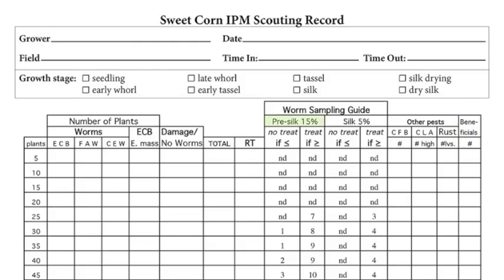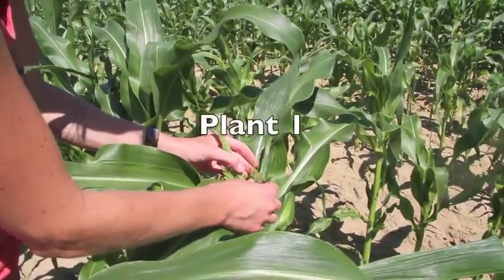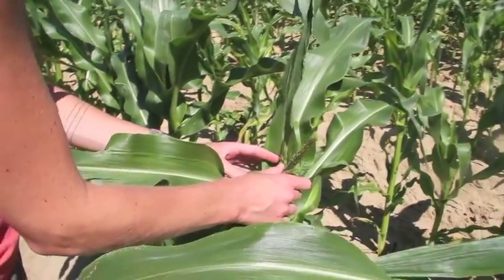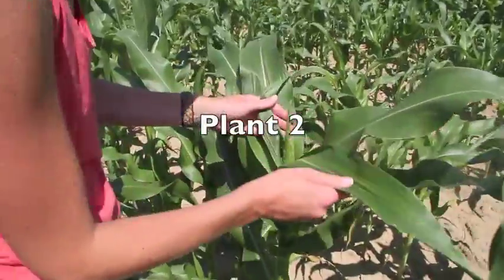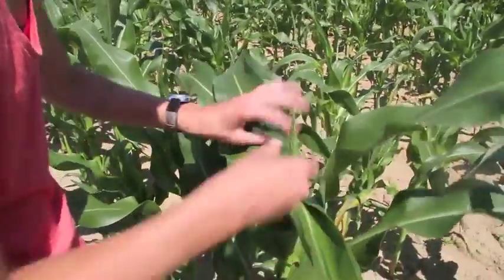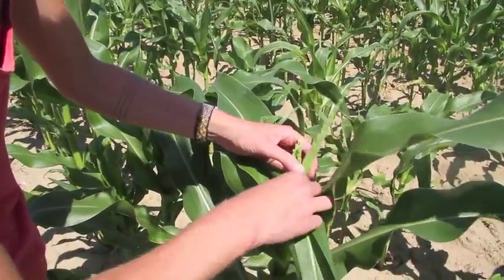Here I will take you through an example of scouting pre-silking corn where the action threshold will be 50% or greater. We will start at one end of our corn field and begin walking in a V-shaped pattern, scouting five consecutive corn plants within one row, depicted in the graphic as five squares within a pink box. The corn we are scouting in this example is at early tassel. We will want to begin scouting just before tassels appear and continue scouting one to two times a week until harvest.